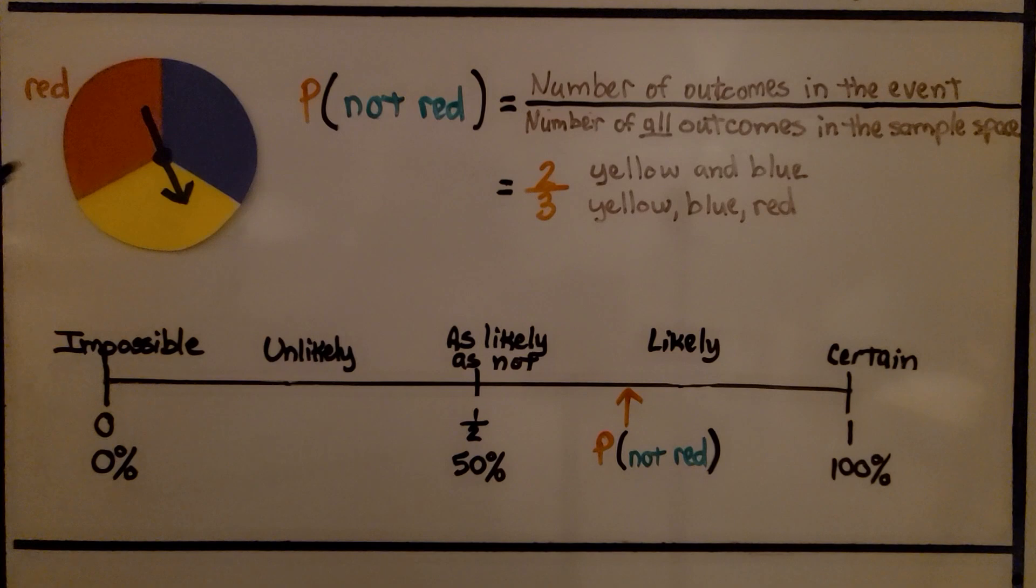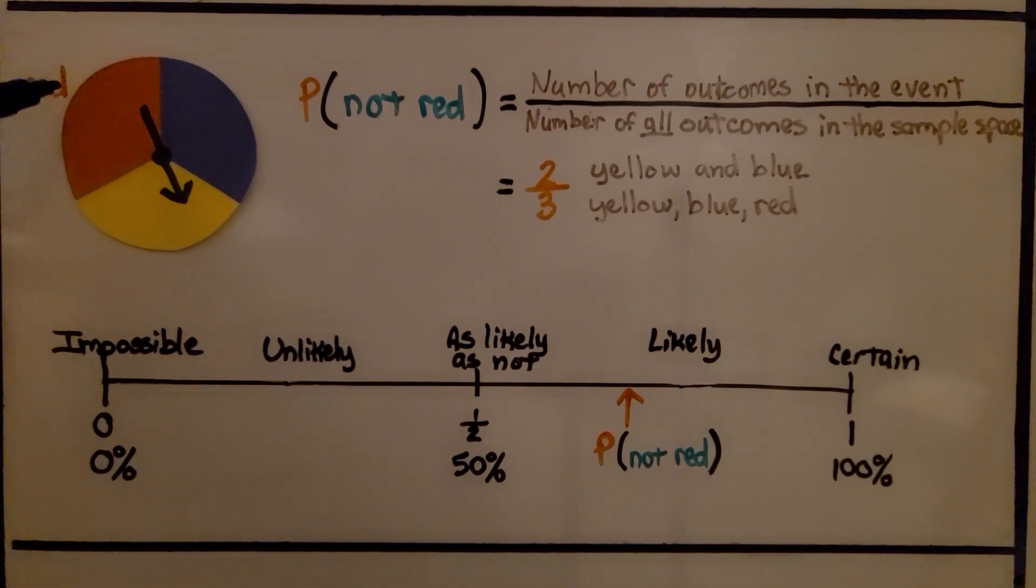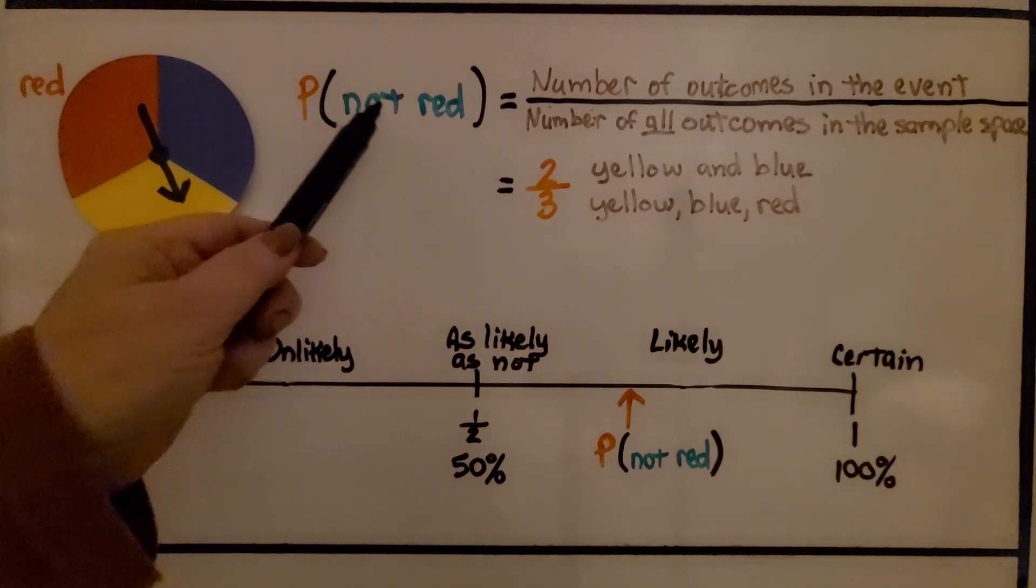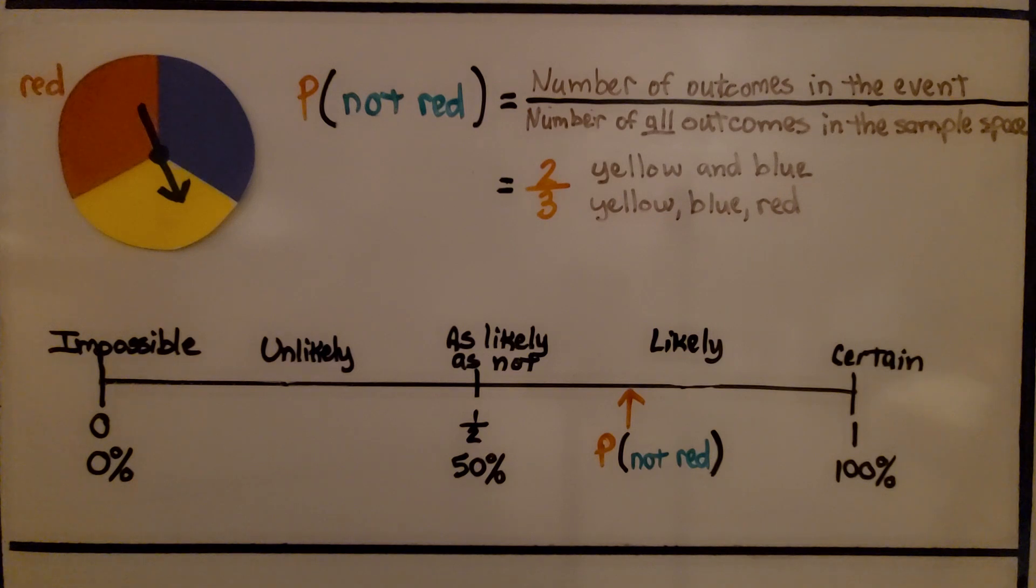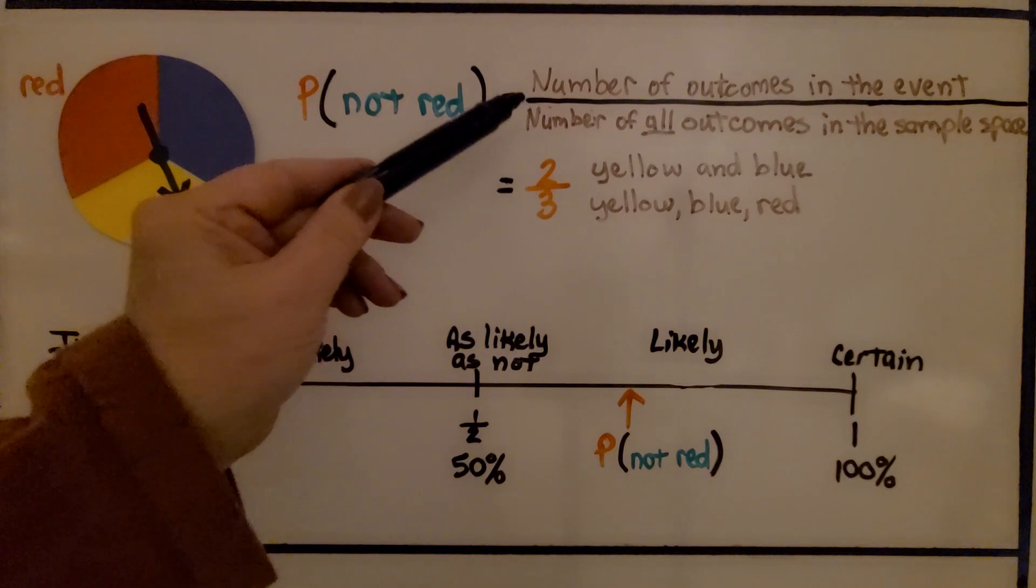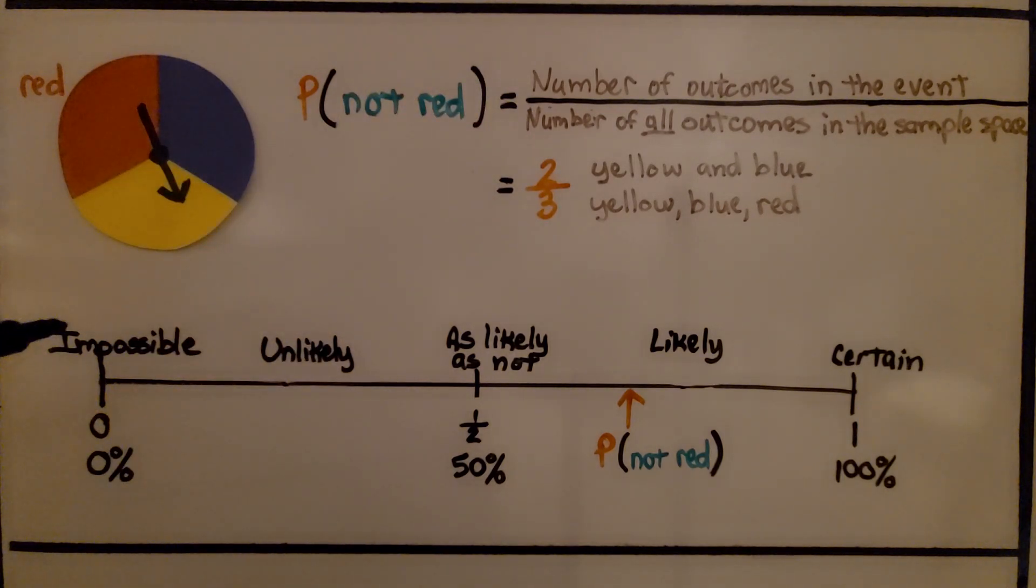Now take a look at this spinner. There's only three sections. One section is red, one is blue, and one is yellow. What's the probability of spinning and it not being red? Well, the number of outcomes in the event is over the number of all outcomes in the sample space. So the number of outcomes in the event would be all the outcomes that would be not red.